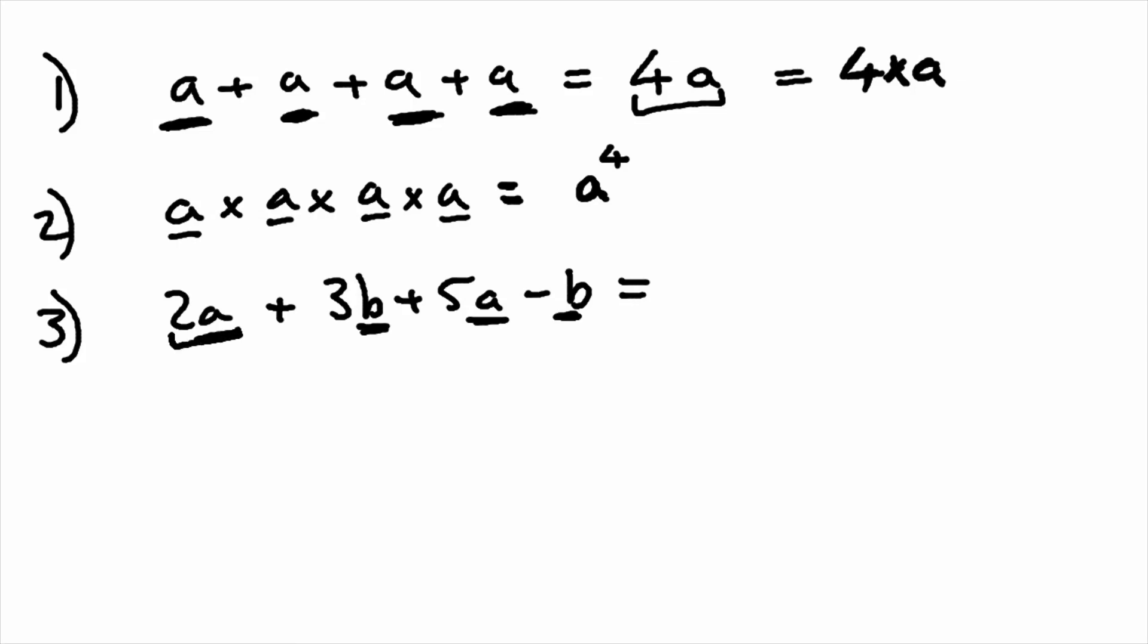We can group together the A's. So 2A plus 5A is 7A. And then separately we can group together the B's. So 3B minus B is plus 2B.